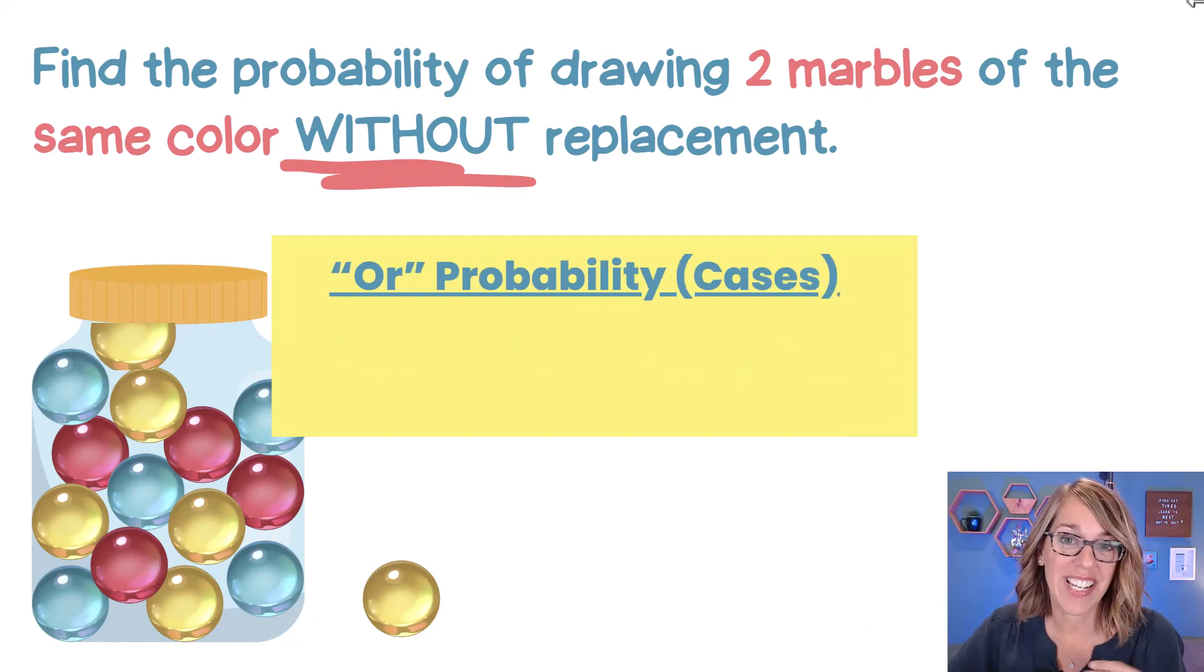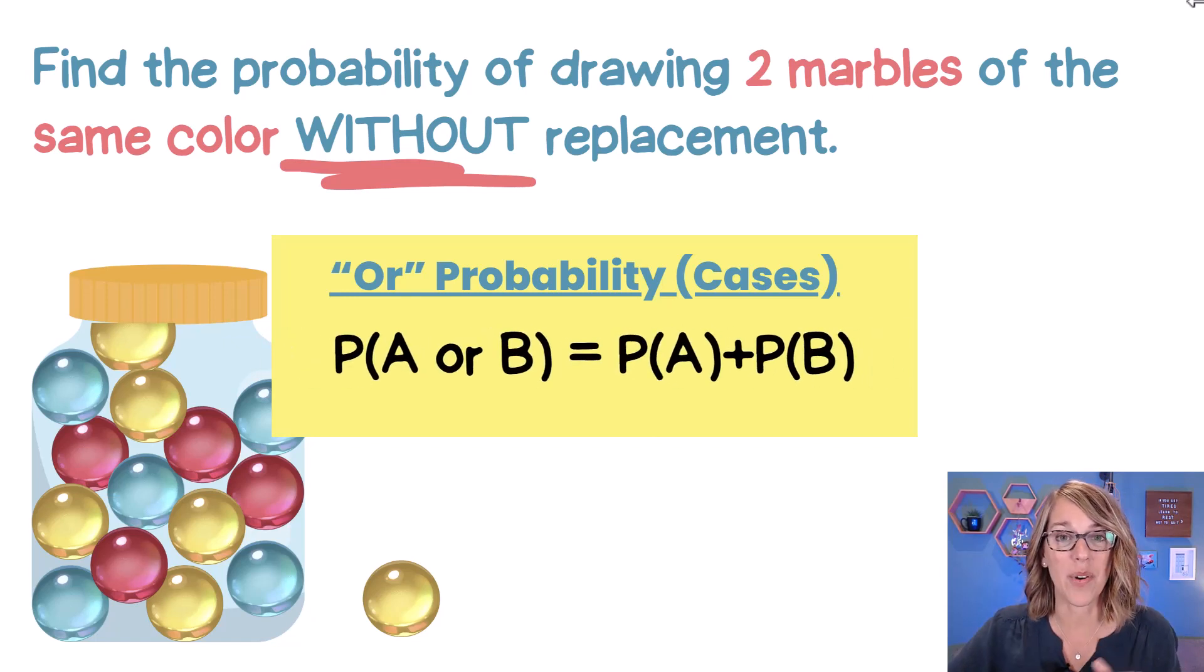The second formula that we need is the OR probability, which is for cases. And that's going to be the probability of A or B is the probability of A plus the probability of B.